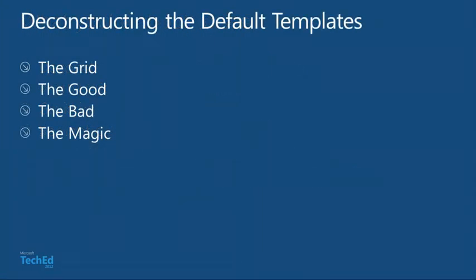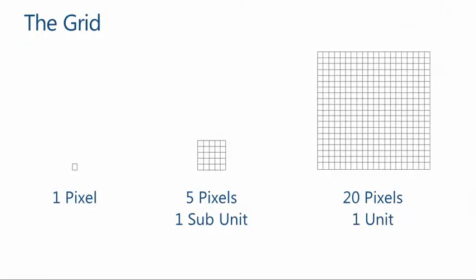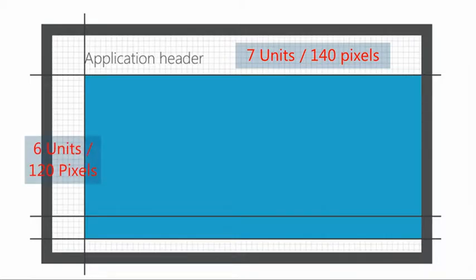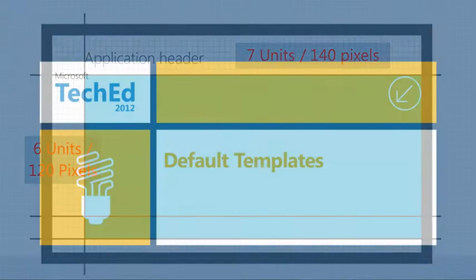Let's start as we always start with a File > New Project. We need to talk through the grid first. The grid in Windows 8 is made up of device-independent pixels. Most of the apps you see — the store apps — everything apart from games will start to look a lot like this, with a 140-pixel top margin and a 120-pixel left margin. Just keep that in mind as I show you what I'm going to show you now.